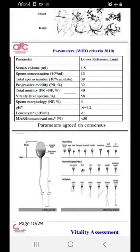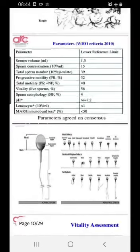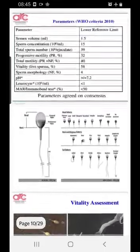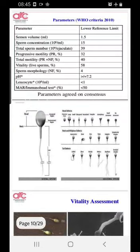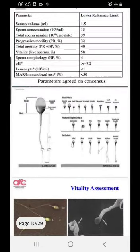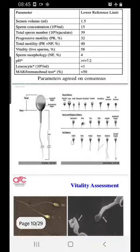The WHO criteria specify: semen volume 1.5 ml, sperm concentration, total sperm number, progressive motility 32%, total motility 40%, vitality 58%, and morphology — normal morphology should be more than 4%. pH should be more than 7.2. Leukocyte count — you should not be seeing pus cells; if present, it indicates infection that needs to be treated.